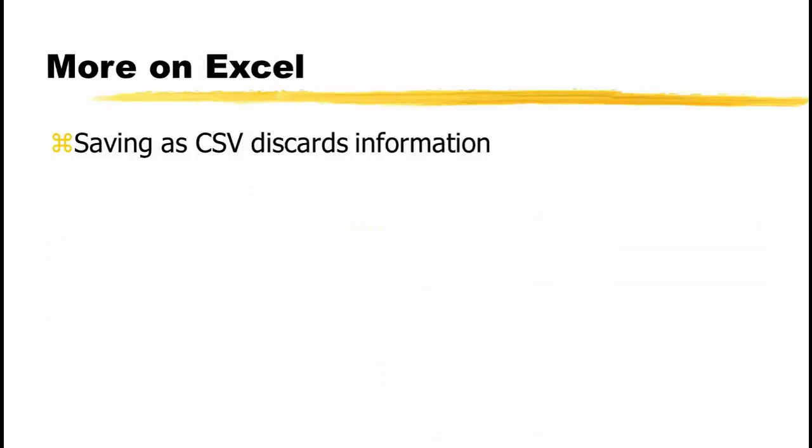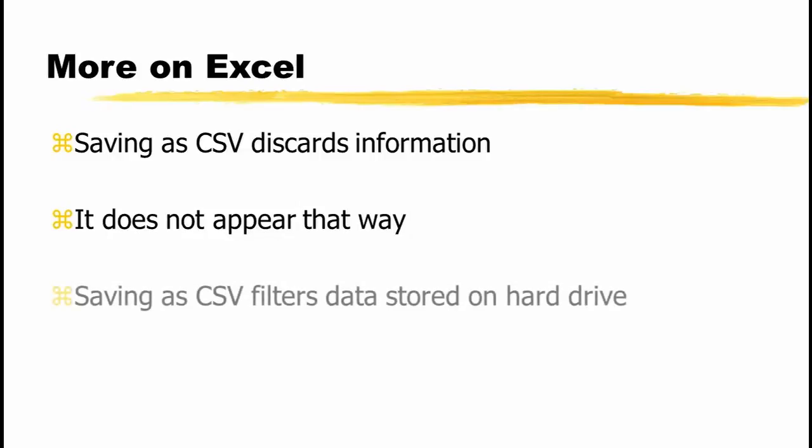As discussed a moment ago, saving an Excel file as a CSV file strips out formulas, formatting, and everything but the current tab. If you are not careful, this can cause you to lose valuable information. To make matters worse, when you save the file it will look like nothing changed. All your formatting and calculations will be in memory. You will still see multiple tabs if your worksheet had them. In fact, the file you are working with will look exactly like it did before you saved it. What happens is that Excel filters the data going into the CSV file on the hard drive, only allowing CSV appropriate data to be written to the file.